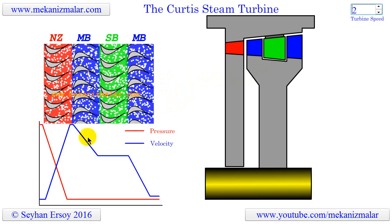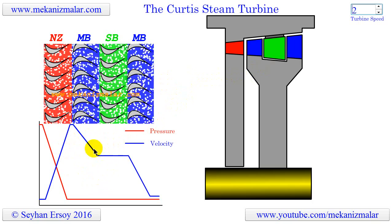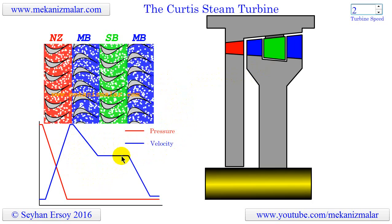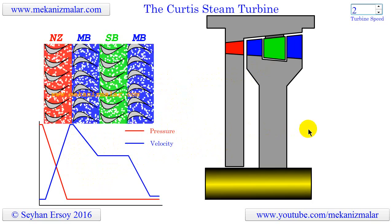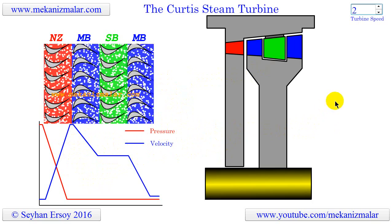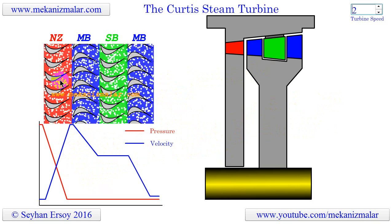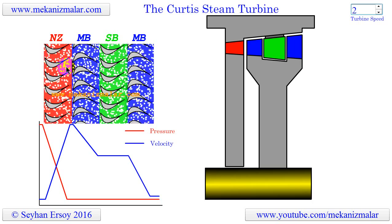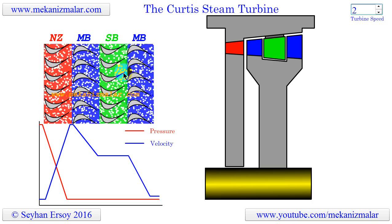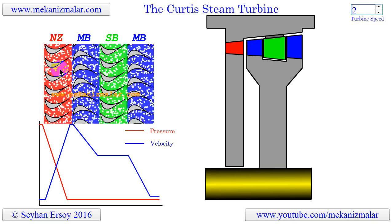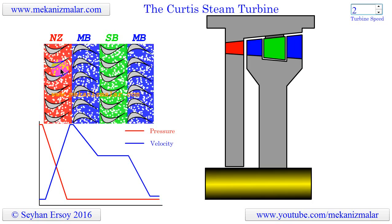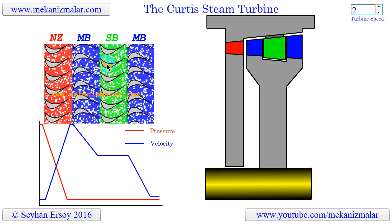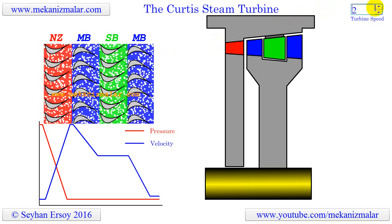Also, a plot of the pressure and velocity changes of the steam is shown while the steam is advancing in the axial direction. As you can see, there are many blade stages with steam flow in between them shown in different colors. I used color codes to show the purpose of each stage. The moving white circles embedded in the colored flows show the direction and magnitude of the flow velocity.